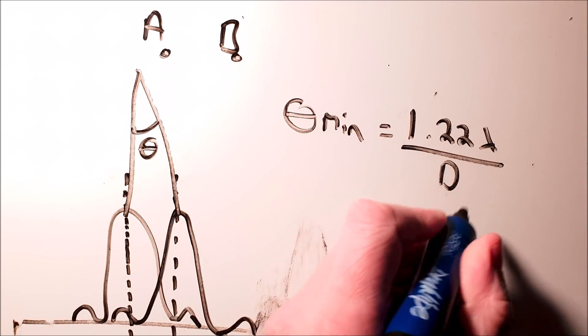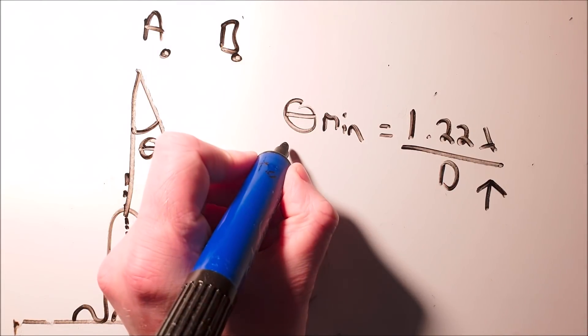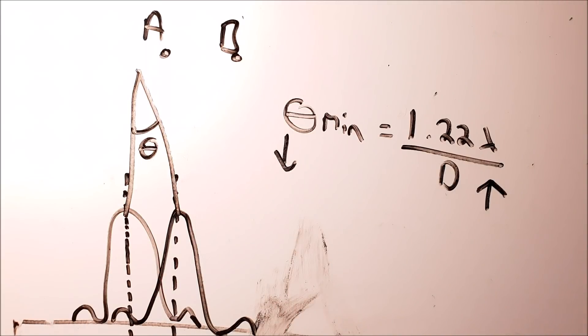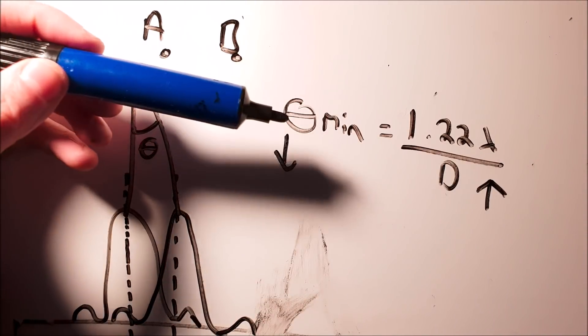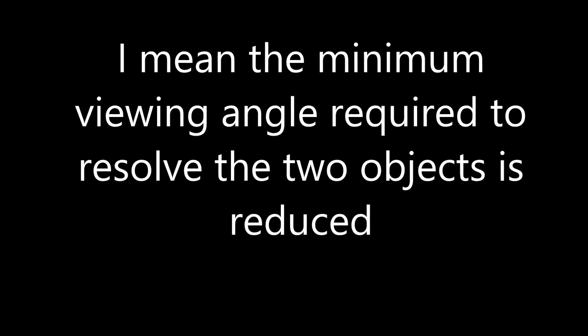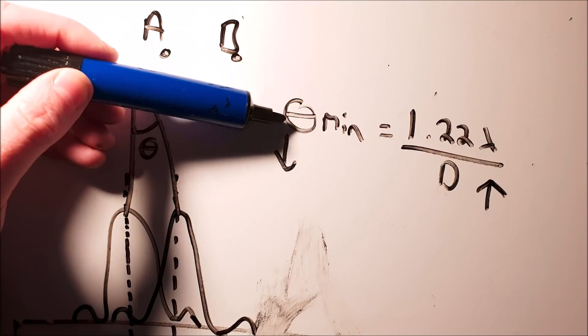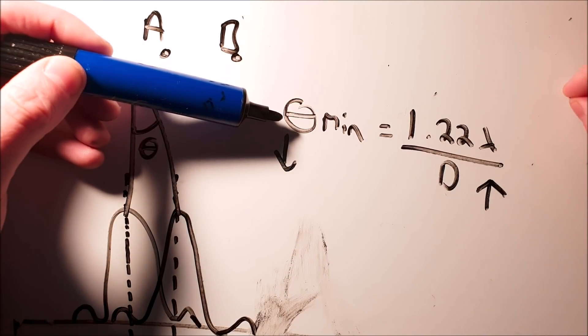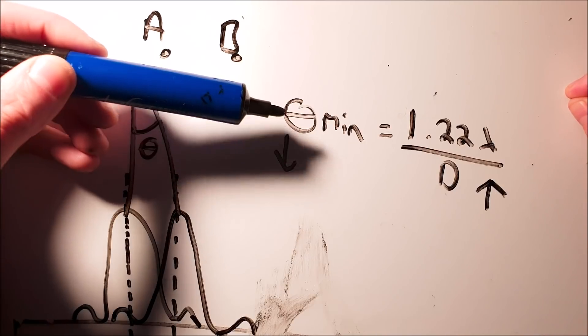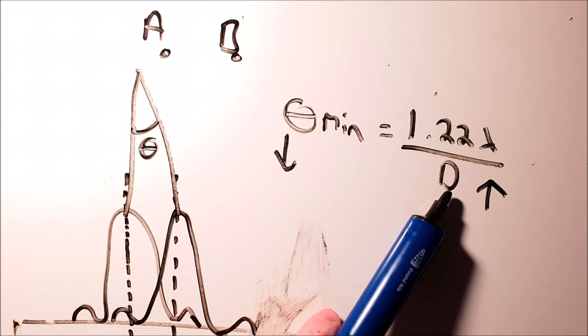Now what that means is what we already all know, that if I increase the diameter of the camera, if I get basically a bigger lens, then the viewing angle is reduced. And what that means is I can resolve two objects that are close together better. I have a better resolution, I'm going to get a better picture from the same distance if I have a bigger lens. And we know that.